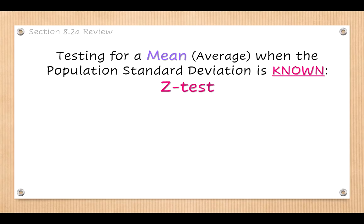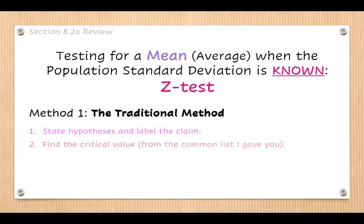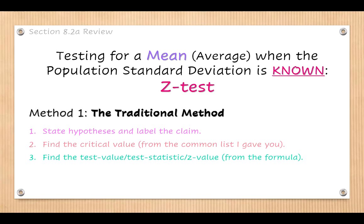There are two widely used and accepted methods in statistics for how to complete the z-test. The first one we looked at was called the traditional method, which had five steps. Step one: we stated the hypotheses and labeled the claim. Step two: we found the critical value, which you can get by looking at that list of common critical values in your notes. Step three: find the test value, test statistic, or z-value — all names for the exact same thing — using the formula in your notes.